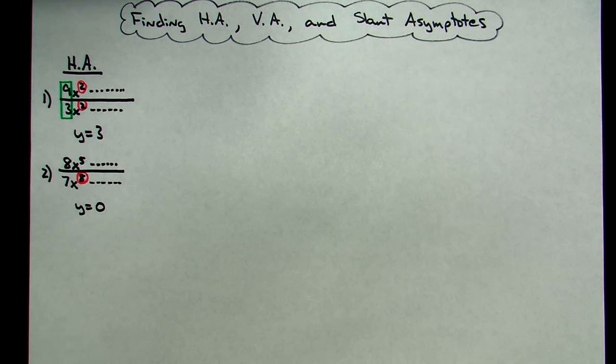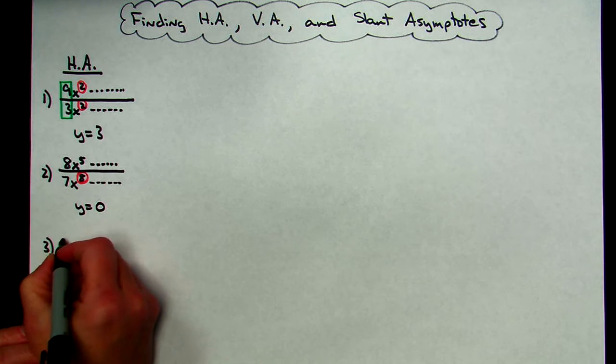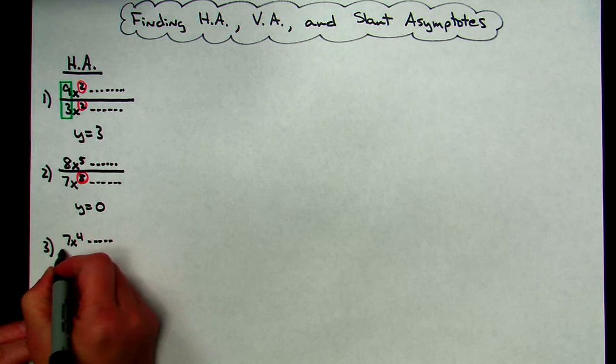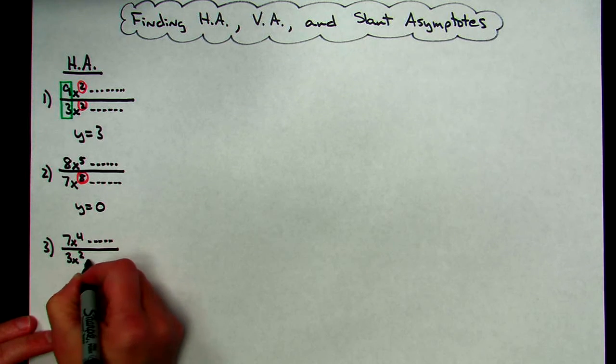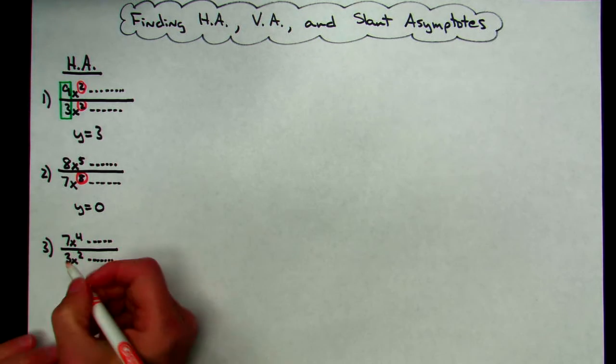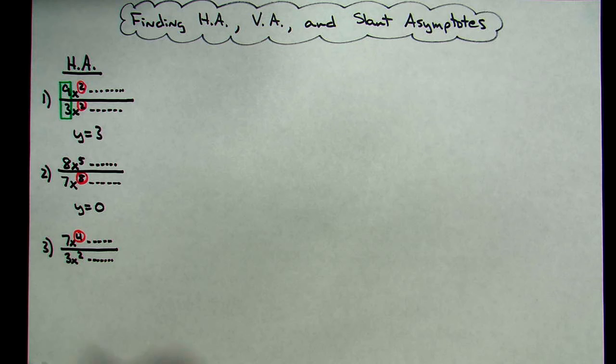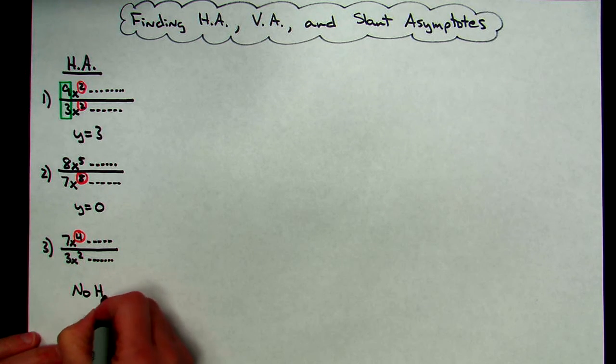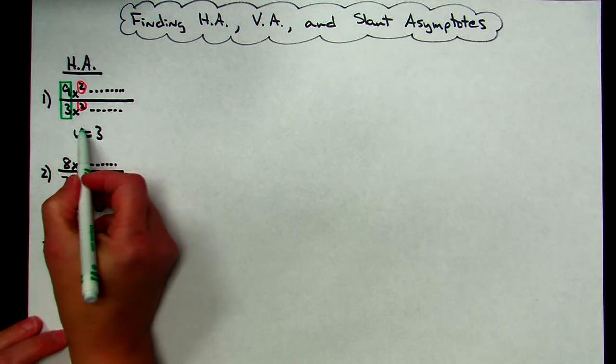And then for your third case, your rational function, you might have a leading term in the numerator of, say, 7x to the 4th, and then the rest of the polynomial would not make any difference. Your denominator might have a leading term of 3x to the 2nd, and then it wouldn't matter what the rest of it is. Again, I'm going to look at those exponents. This time, the highest exponent is in the numerator, and when the highest exponent is in the numerator, then I do not have any horizontal asymptotes, so no horizontal asymptotes. So three scenarios and three rules for finding your horizontal asymptotes to a rational function.